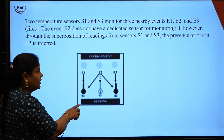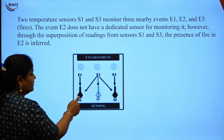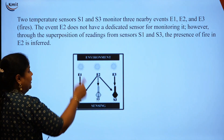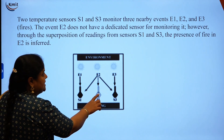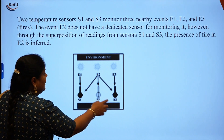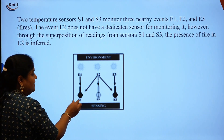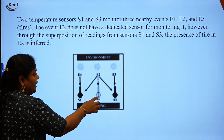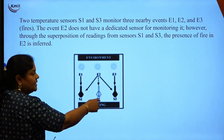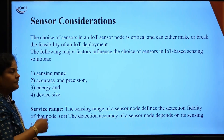Another example of virtual sensing: in wildlife monitoring, we have sensors S1 and S2 with temperature sensors, and three events E1, E2, E3. Event E2 does not have a dedicated sensor placed there, but through suggestions from sensors S1 and S3, E2 can also be monitored. Physically, sensors are present for E1 and E3, but E2 uses virtual data taken from S1 and S2 to perform the required actions — this is called virtual sensing.